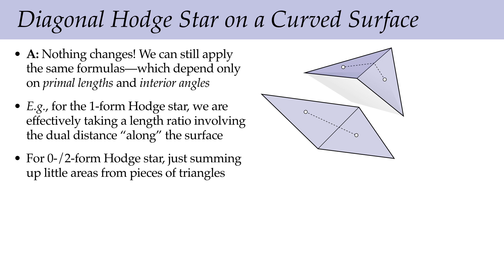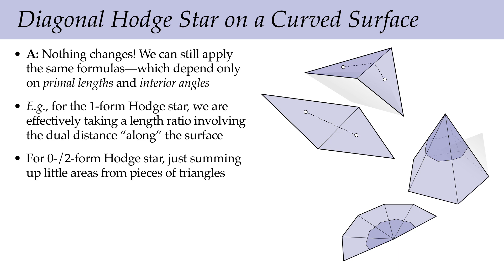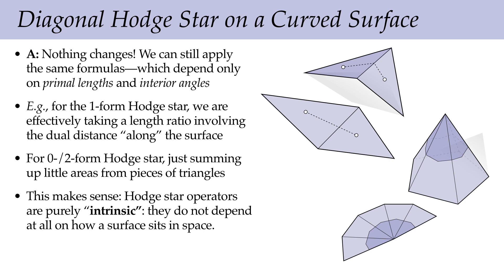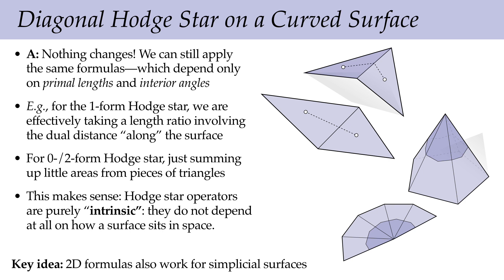For zero and two-form Hodge stars on curved meshes, it's a similar story: we can still work out areas one triangle at a time and sum them up. This makes sense from the smooth picture — in the smooth setting, Hodge star operators are purely intrinsic, not depending on how a surface sits in space. We can bend and deform the surface without distorting the Riemannian metric and get the same Hodge star. The key takeaway: the 2D formulas also work for curved simplicial surfaces.